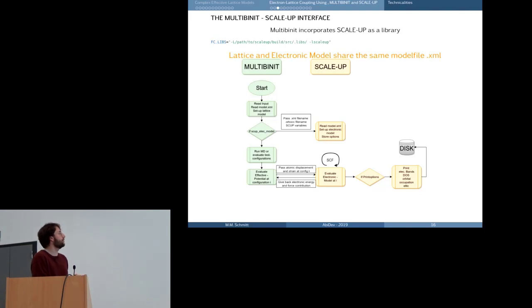And then when we run an MD or we evaluate any given atomic configuration, that's the second point of interaction between the codes. Multibinit will pass the instantaneous atomic configuration to ScaleUp, and ScaleUp will do a self-consistent field cycle to evaluate the electronic model at this given configuration. It gives back the electronic energy and force contribution. If we set any print options, ScaleUp will print to the disk.